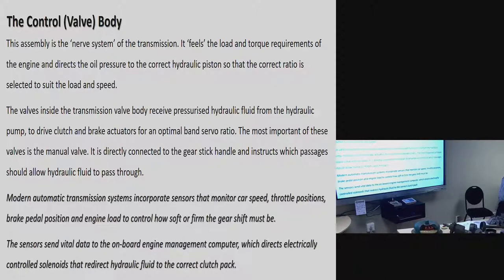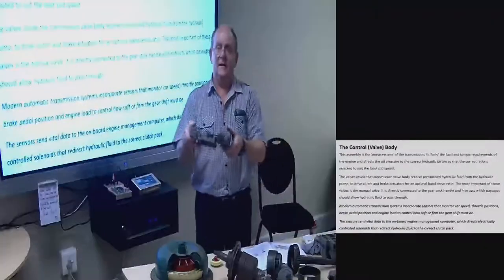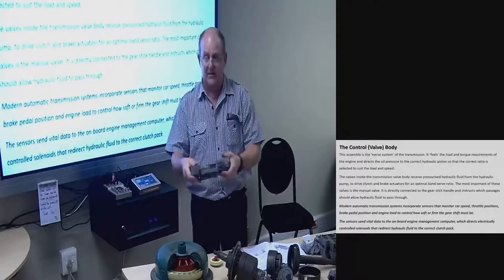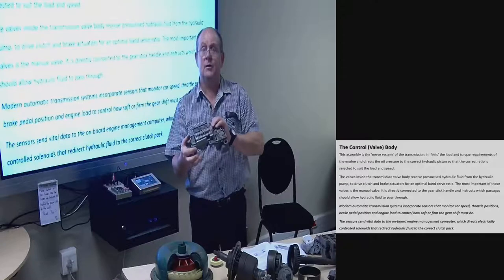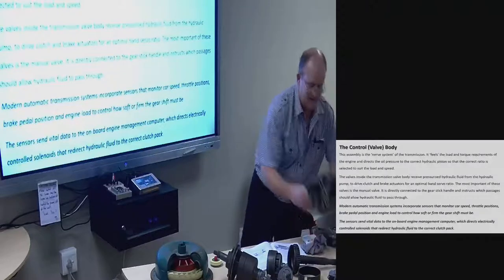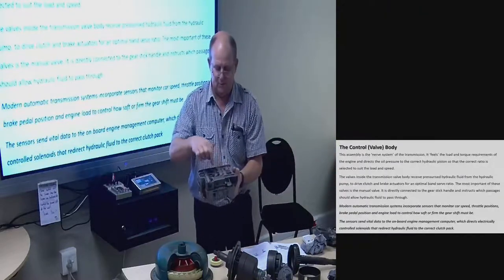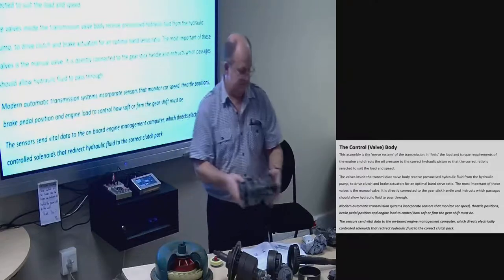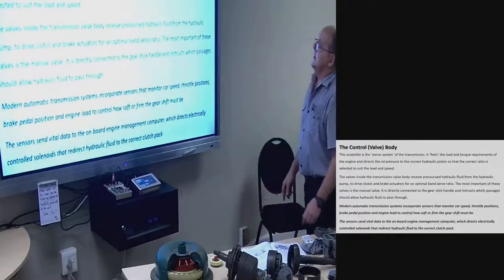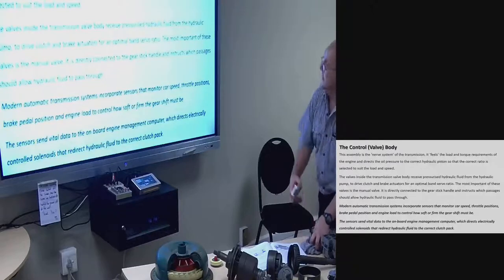Oil pumps. In the front of the gearbox, the torque converter drives the oil pump inside, which circulates oil through the valve body and into the clutch system and actuators inside the gearbox. The oil pumps are built into the transmission to control the brake bands and multi-disc clutches. Sometimes there are two pumps. Pump types generally used are the variable output vane type and the internal-external gear type, with a pressure relief valve.